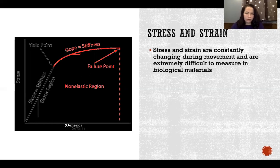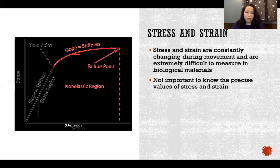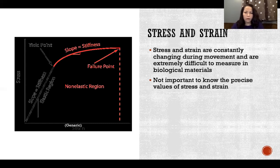It's very difficult, if not impossible, to directly measure those things in a living, moving person. Thankfully it's not super important that we know the precise values of stress and strain, but rather if we're working with a type of tissue — like in injury rehabilitation, or we're trying to optimize performance or prevent injury — it is really helpful to understand the stress and strain properties of the tissues that you're working with. So it's really helpful to understand the characteristics of how tendons and ligaments respond to stresses and forces, or how bones respond to forces. That's why we want to know about the stress-strain curves.